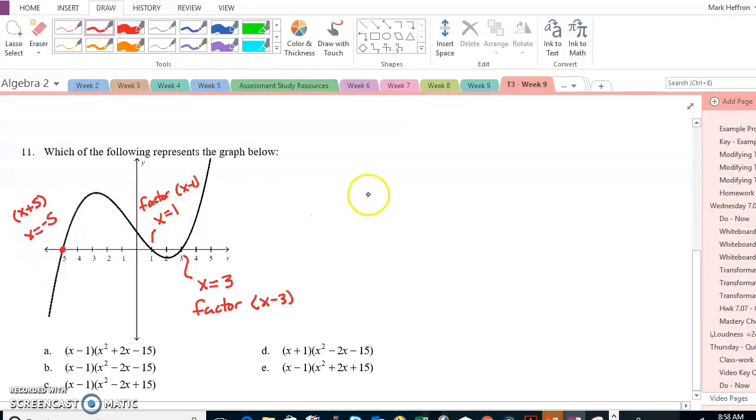Similarly, the other ones are set up for you. You've got x minus 1 for x equals 1, x minus 3, and x plus 5. We know that this is going from low to high, so it's going to be y equals a positive x cubed.